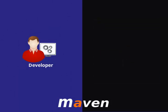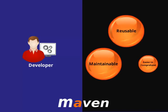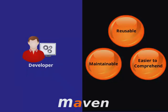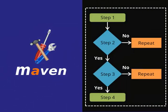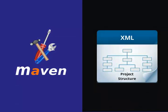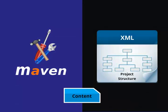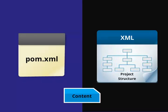Maven's primary goal is to provide developers a comprehensive model for projects which is reusable, maintainable, and easier to comprehend. Maven is a tool that interacts with this declarative model. Maven project structure and contents are declared in an XML file — the pom.xml, referred to as Project Object Model or POM, which is the fundamental unit of the entire Maven system.